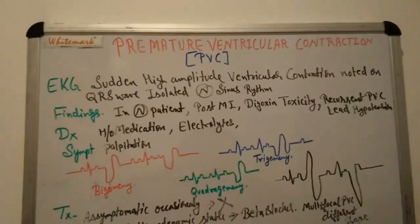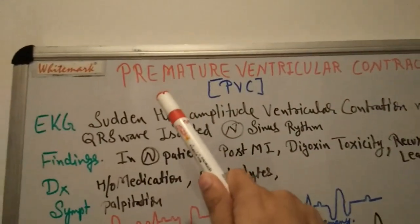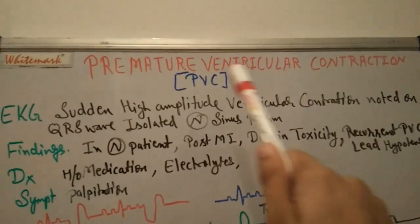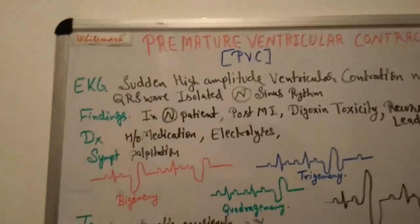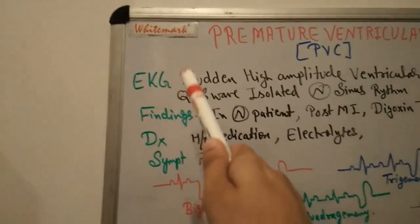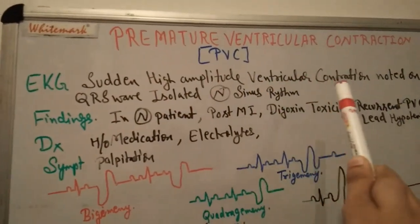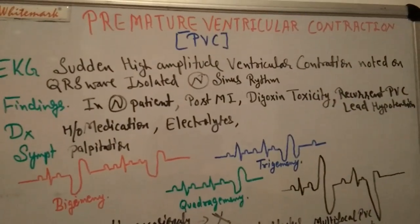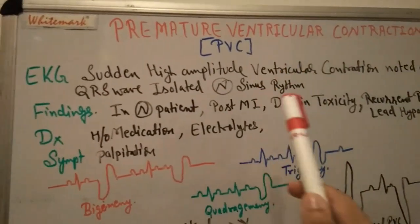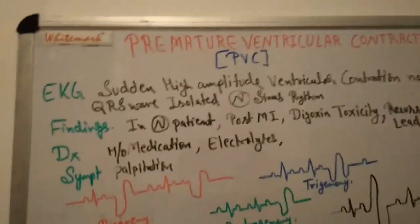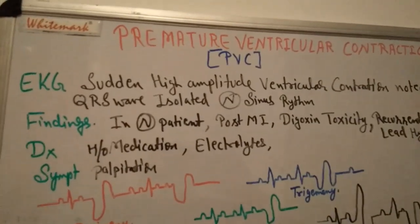Good evening doctors. Today's topic is about Premature Ventricular Contraction, or PVC. On ECG (electrocardiography), we see a sudden high amplitude ventricular contraction — an isolated QRS complex noted in an otherwise normal sinus rhythm.